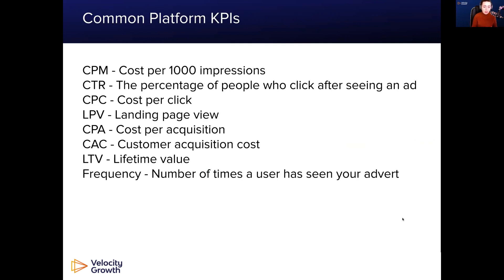Common platform KPIs: when you're choosing a platform, these are the KPIs you're going to be looking at — your cost per impressions, click-through rate, cost per click, landing page views, cost per acquisition, customer acquisition cost, lifetime value, and frequency, which is the number of times a user has seen your advert. These KPIs will give you indicators into how well it's working. KPIs directly correlate back to what you're looking for. For example, if you want the lowest CPA possible — you want conversions — that's a high intent, conversion-focused KPI, and you might choose a platform based on that.